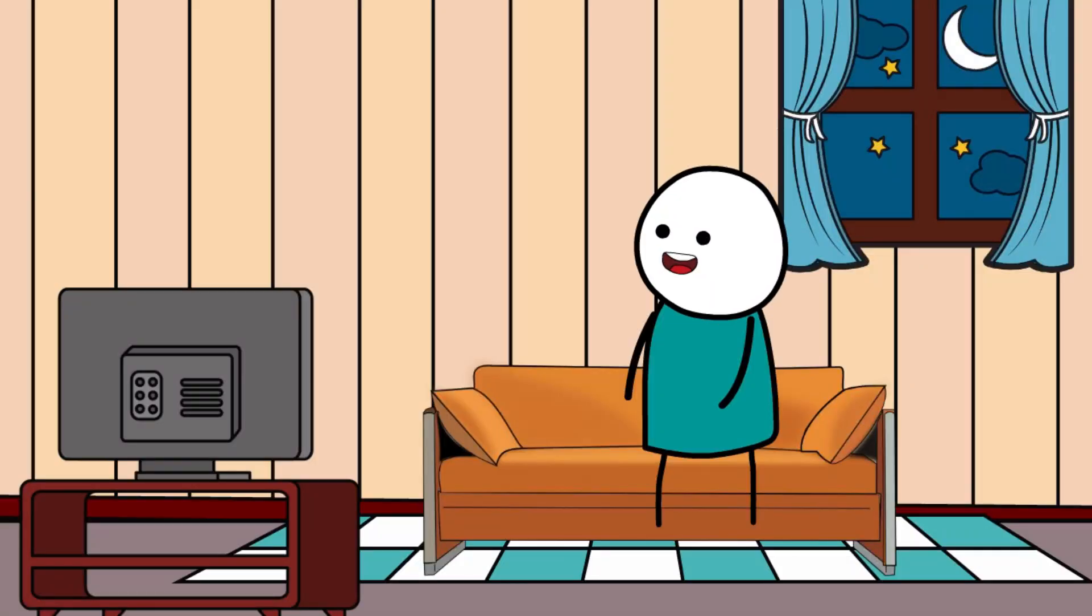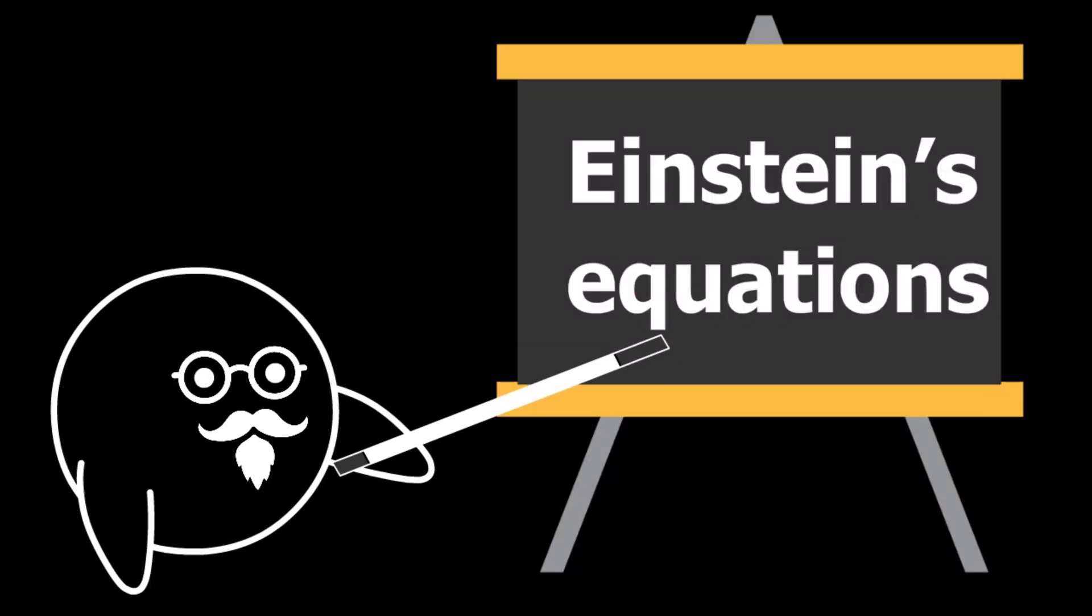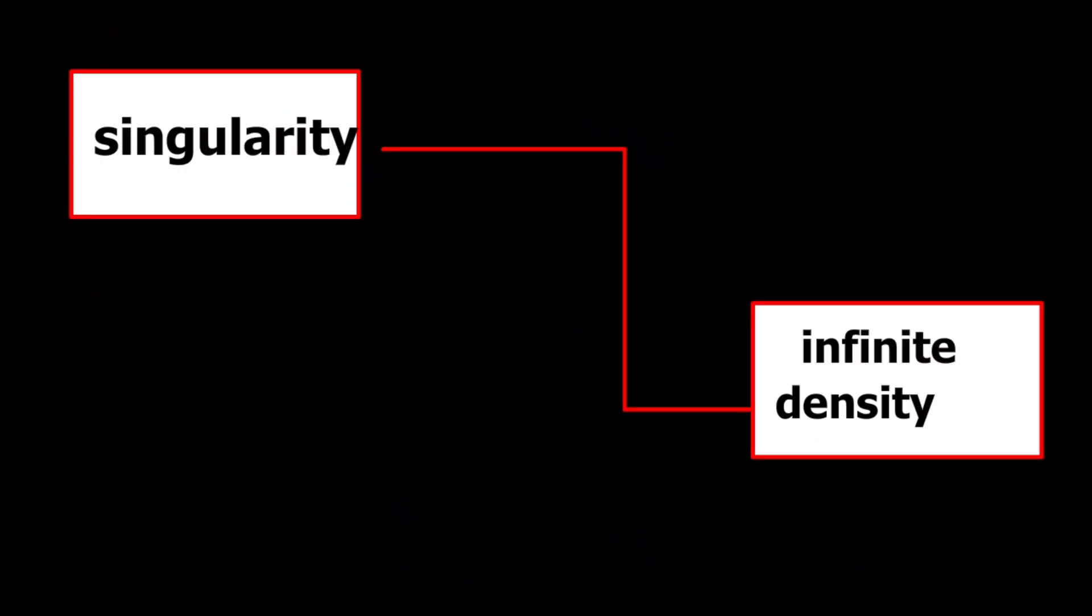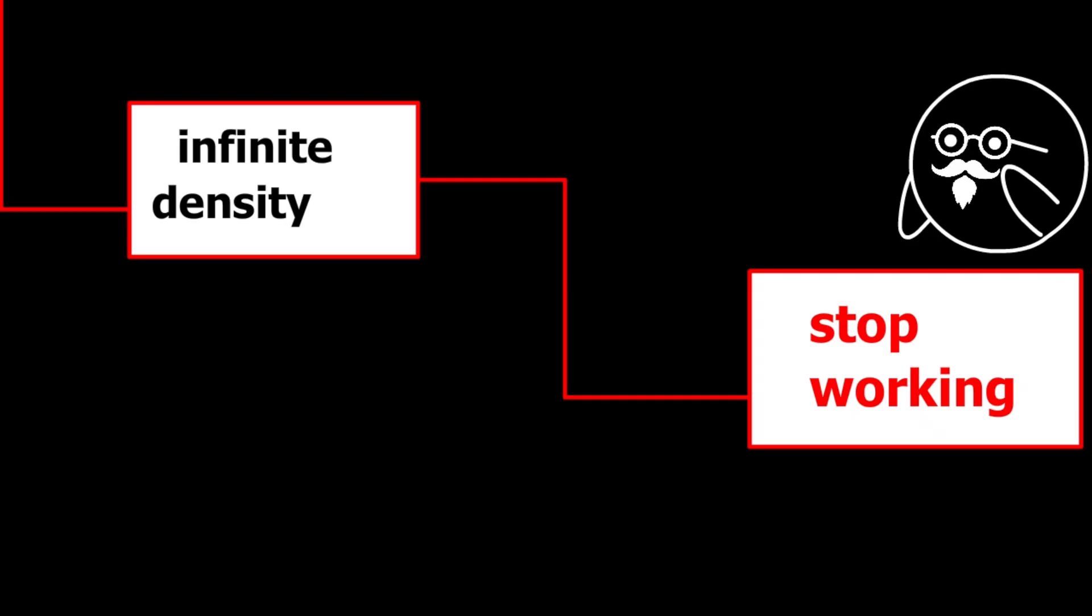So what's inside a black hole? Truth is, we don't know. No one does. Einstein's equations tell us that at the center of a black hole lies a singularity—a point of infinite density where the laws of physics simply stop working. Space and time collapse into one another.